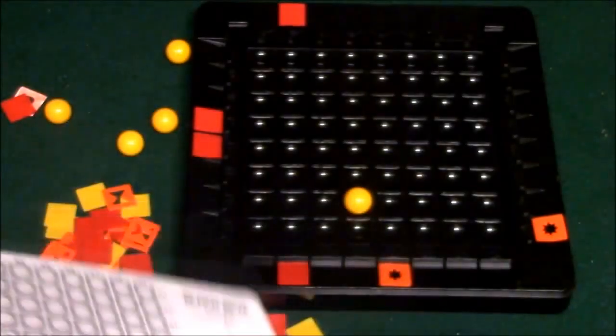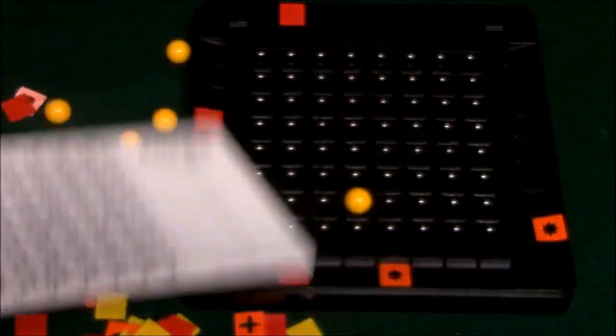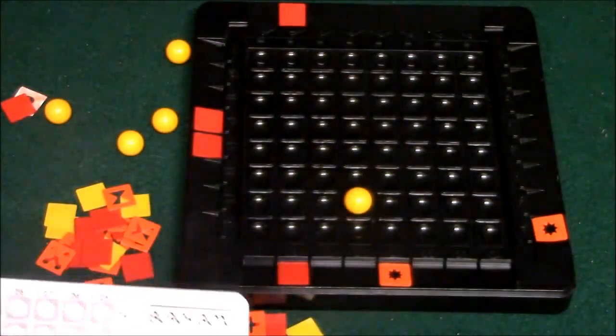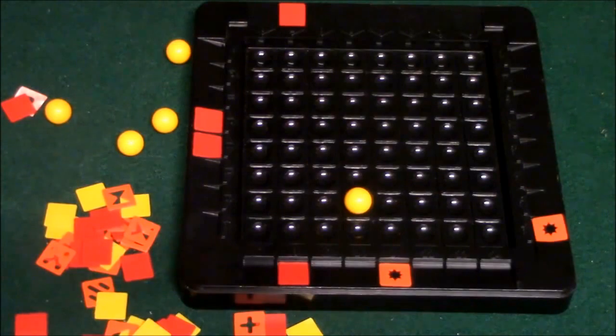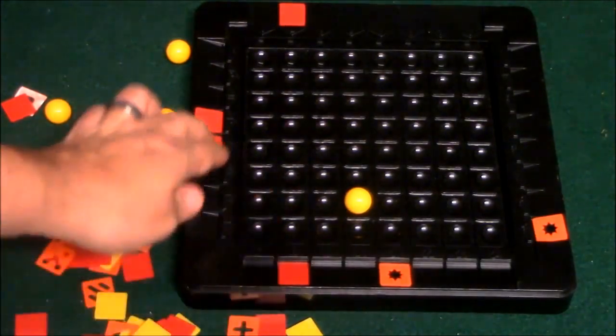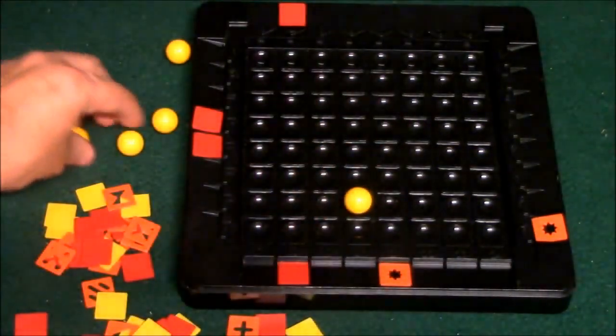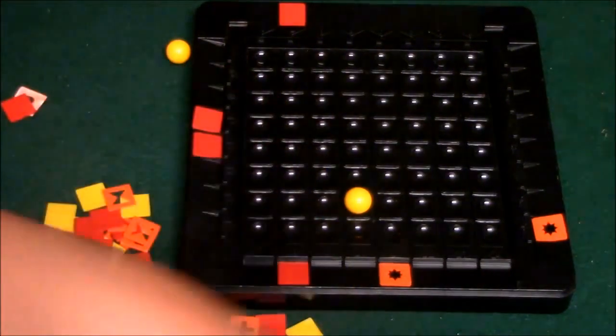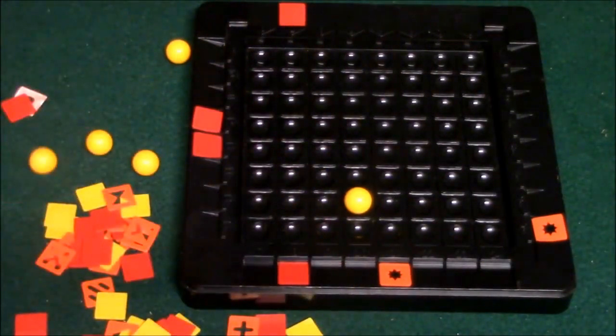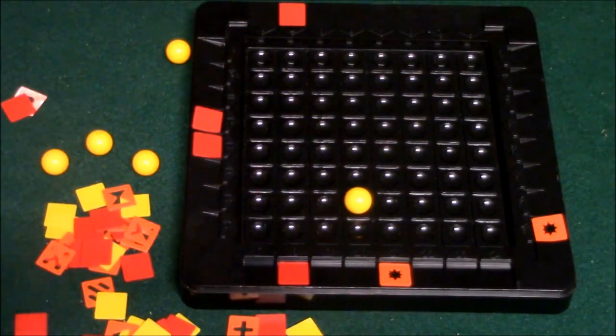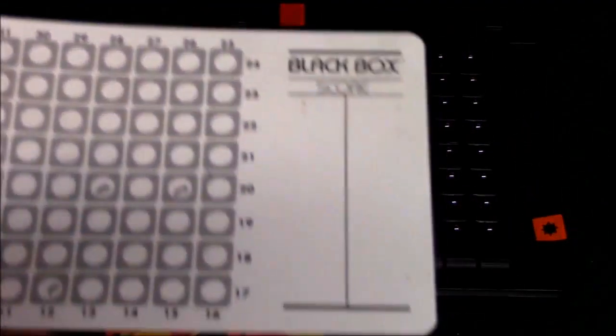Ultimately what's going to happen is the seeker is going to go ahead and place the marbles where he thinks they are. And he wants to try to do it in as few turns as possible. The way the scoring works is there's one point for each one of these markers that is used. If he gets the marbles right he's not going to lose any points. However if he guesses some of the marbles wrong he's going to lose some points. And then you just basically do as many rounds as you'd like. And the person that has the lowest score is the winner.